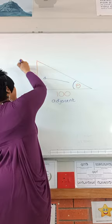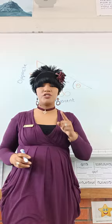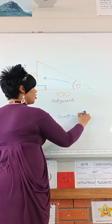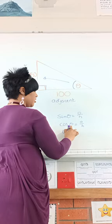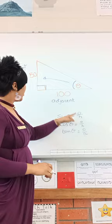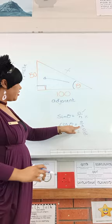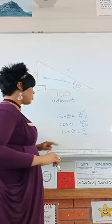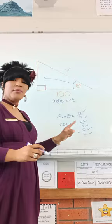Step one is to figure out which ratio to use. Is it going to be sin theta — which is opposite over the hypotenuse — cos theta — which is adjacent over the hypotenuse — or tan theta — which is opposite over the adjacent? I don't have the hypotenuse, so sin and cos are out. I have opposite and adjacent, so I'm going to use tan theta.